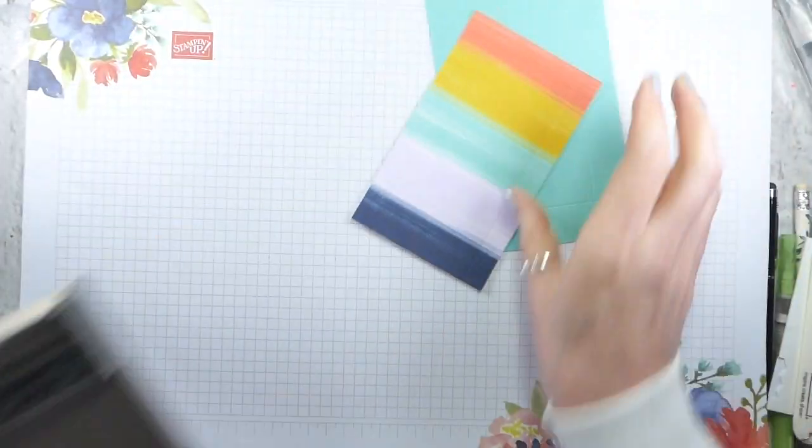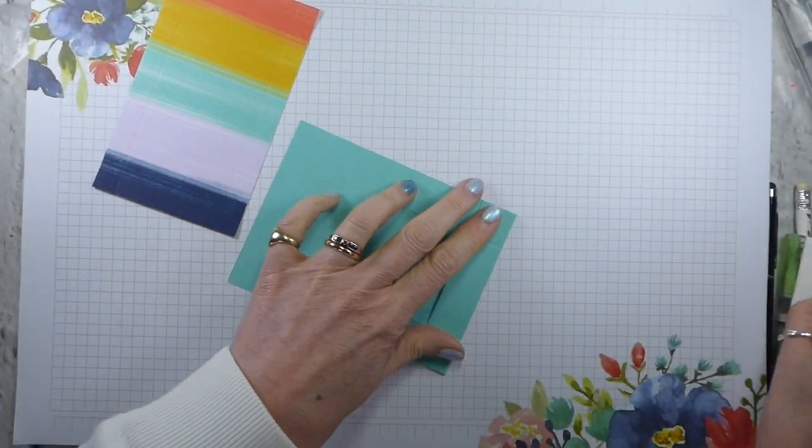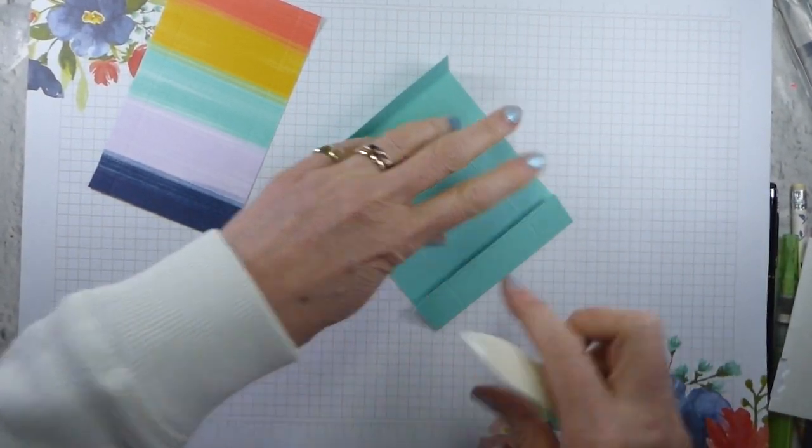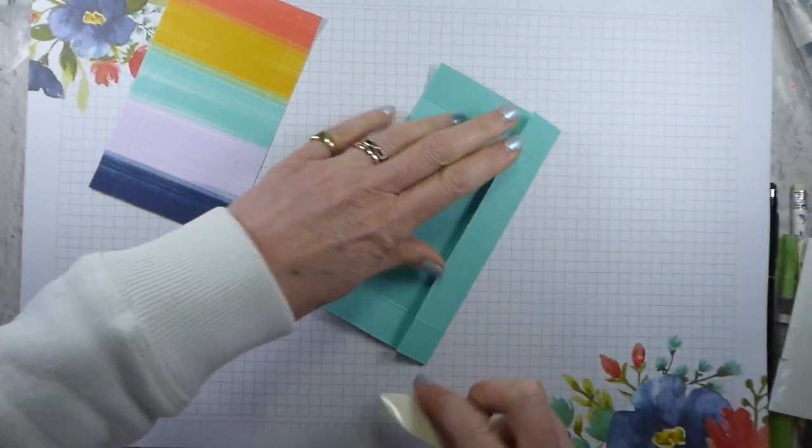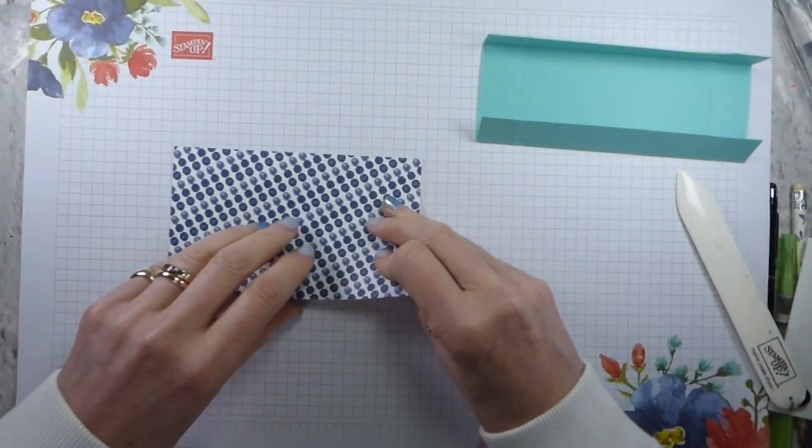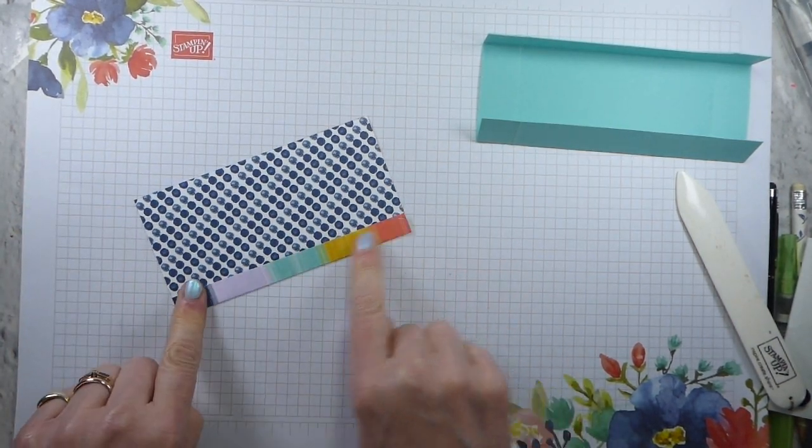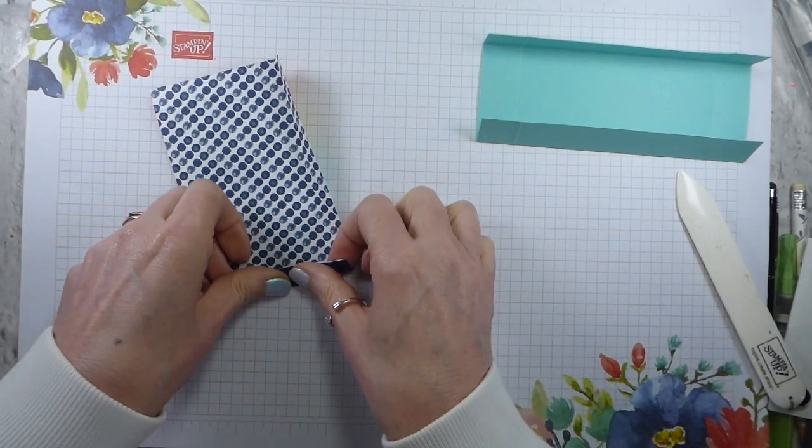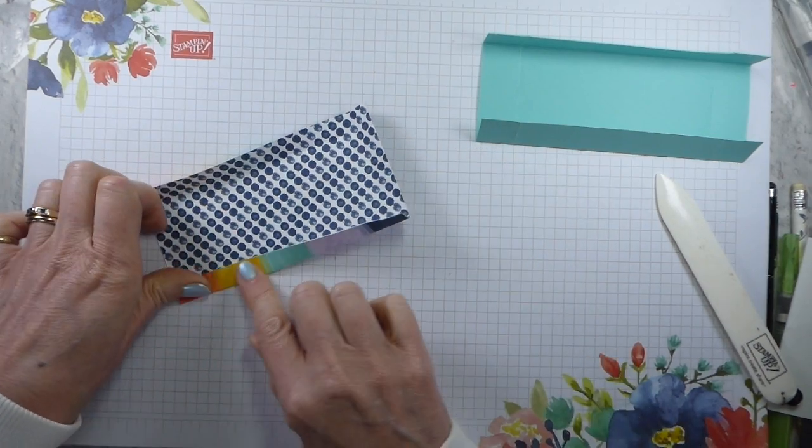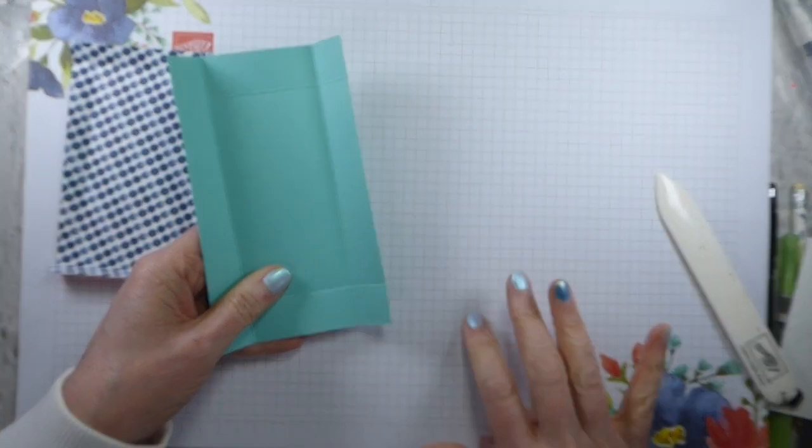So just gently run your score tool down. So that's our scoring done. Now, I am waiting for my new adhesive. It's been dispatched, but it hasn't arrived yet. So I'm going to be using tear and tape, but this would be perfect for Seal Plus, which is our new extra strong adhesive. It's kind of, we believe, it's like Fast Fuse, but maybe on steroids. This I'm just going to fold with my fingers because sometimes if you use your bone folder on paper, you can crack the paper. So it just reduces that chance.